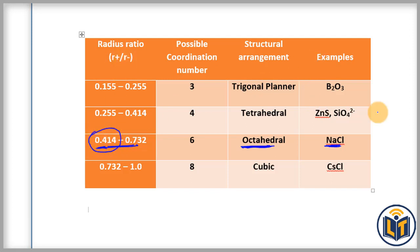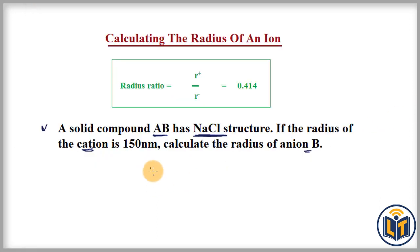This number is taken from the table. Then the formula we apply here becomes r+ divided by r- is equal to 0.414. This is why I had given this formula.